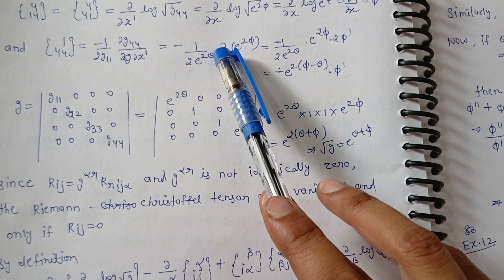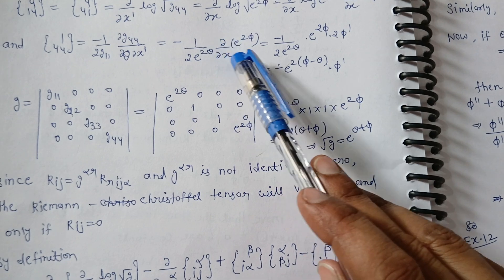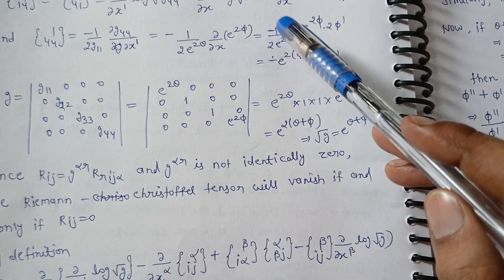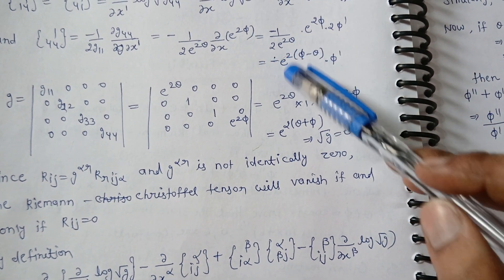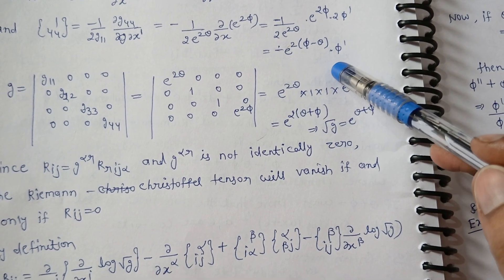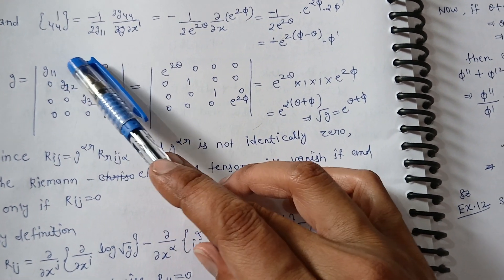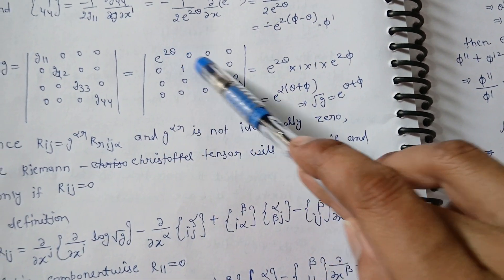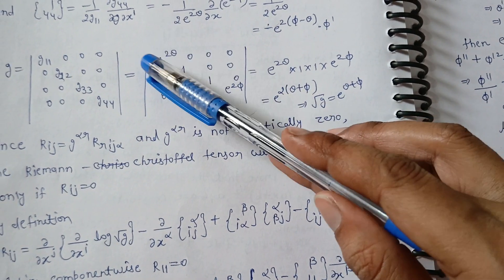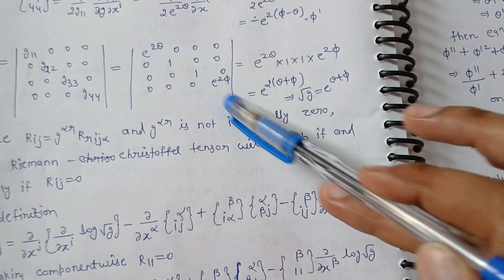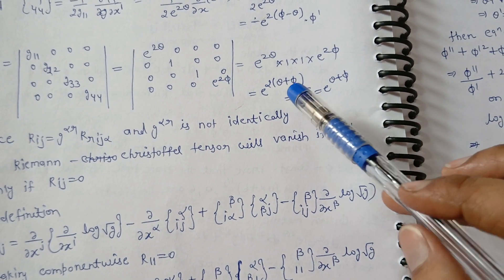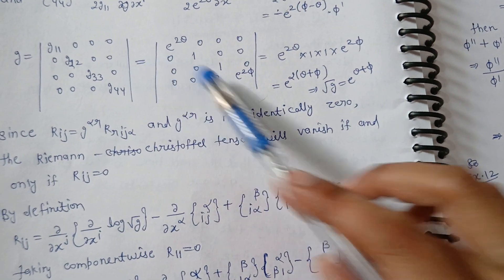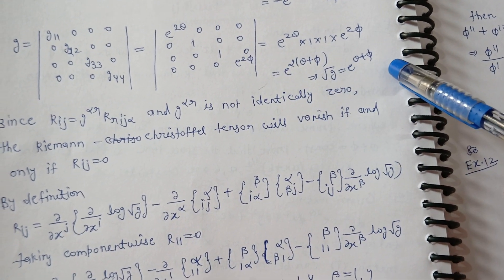We substitute the G₁₁ and G₄₄ values and differentiate with respect to x. The derivative of e^(2 phi) with respect to x gives 2 phi-prime times e^(2 phi). Computing the diagonal entries and multiplying them, we obtain the determinant g, and taking the square root gives root-g equals e^(theta plus phi). We verify that g is not identically zero.